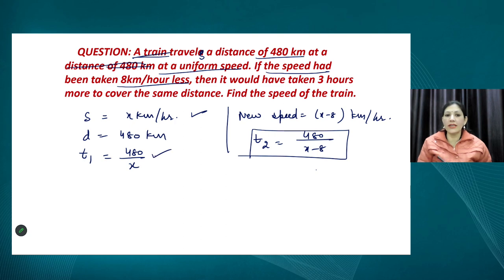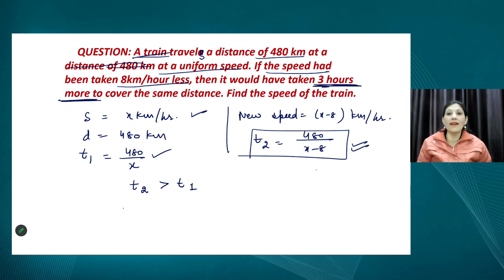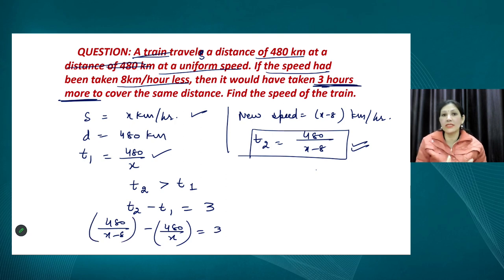T2 is greater than T1 because speed is reduced. T1 equals 480 upon x and T2 equals 480 upon (x minus 8). The question tells us T2 minus T1 equals 3. Now our viewers will be able to solve this question on their own. The first task — converting the real-life statement into an equation — has been done. I would like our viewers to solve this and share the solution with us.